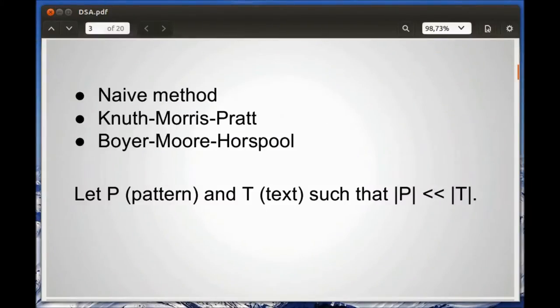The methods we will be comparing are the Naive method, the Knuth-Morris-Pratt, and the Boyer-Moore-Horsepool algorithms. All of them use two strings as input: the pattern and the text. The size of the pattern is generally much smaller than the size of the text. The aim is to find all occurrences of some pattern in a larger string.